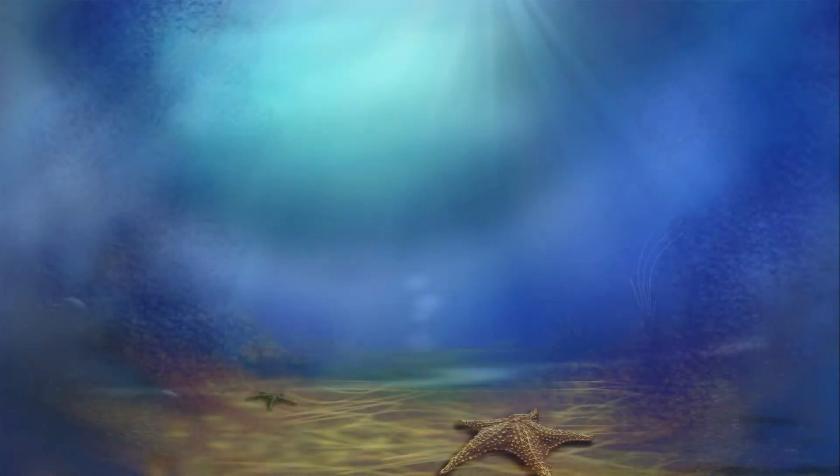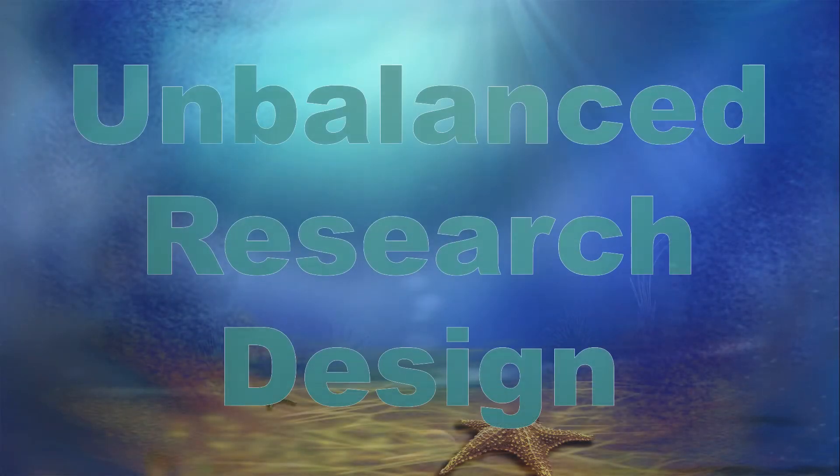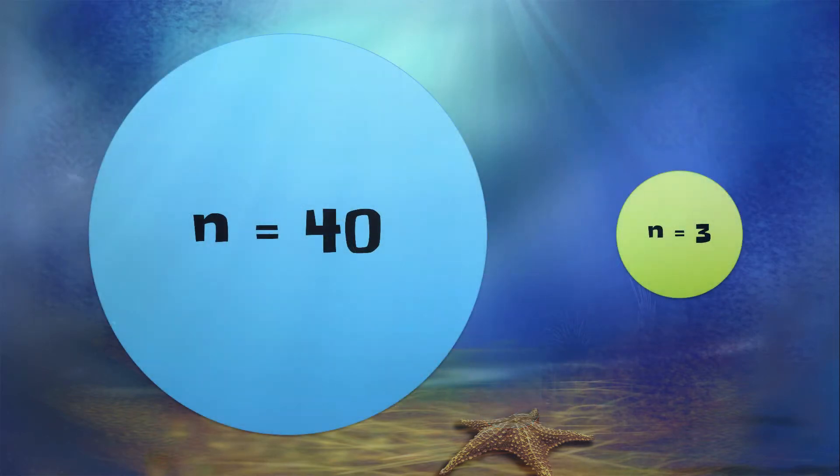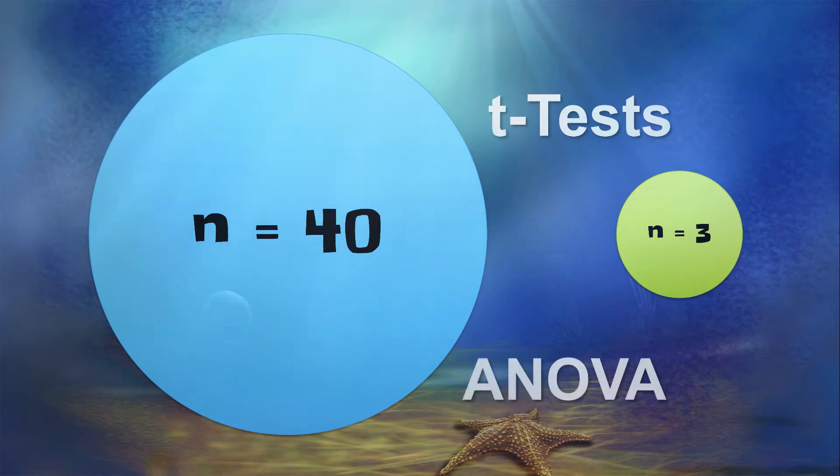This is a circumstance called an unbalanced research design. When you want to compare two or more groups, and those groups are of different sizes, the research design is unbalanced. This is true for t-tests, but also for ANOVA and even multivariate tests.